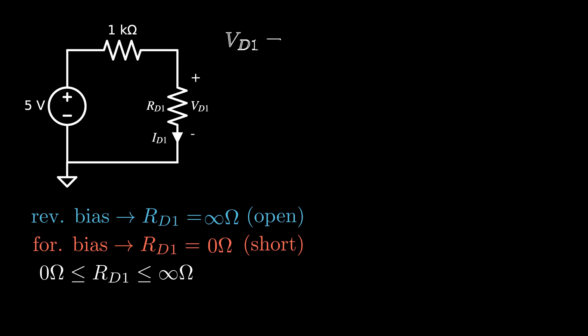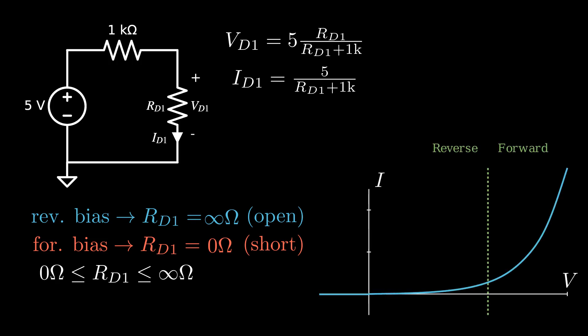It is useful to find all of the points on our VI plot that could exist for these values of R sub D1. We can write expressions for the voltage across the diode and the current through the diode. Locating those two points on the VI curve, when the diode is a short, the point is located on the vertical axis.